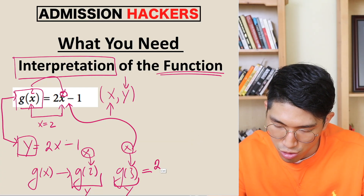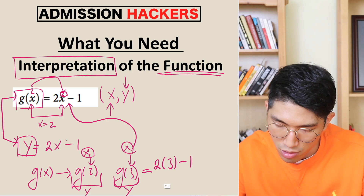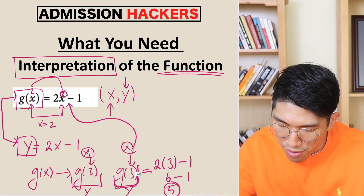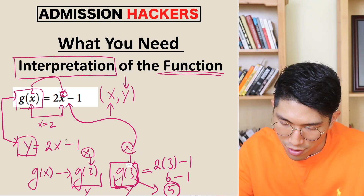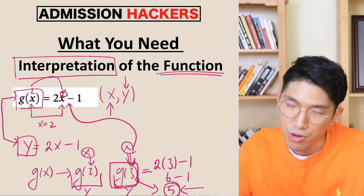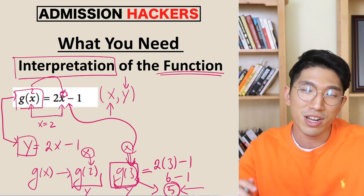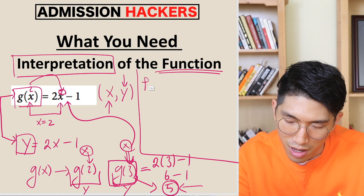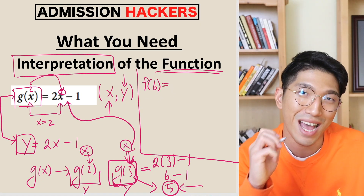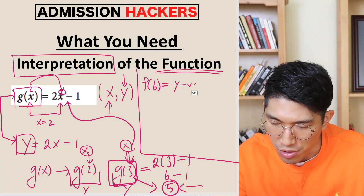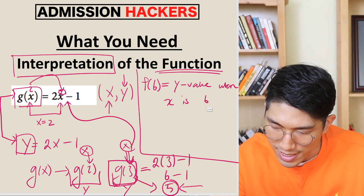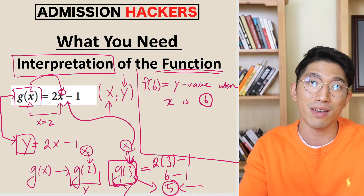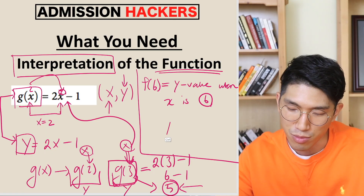For instance, it's going to be 2(3) − 1, which is 6 − 1, which is going to be 5. So g(3) is going to be 5. Whenever x is equal to 3, your y value is going to be 5. To summarize: if the question gives you something like f(6), what it's asking you to find is the y value when x is 6. You just plug in 6 into the function, find out the y value, and that's going to be your answer.